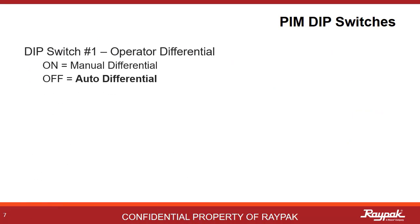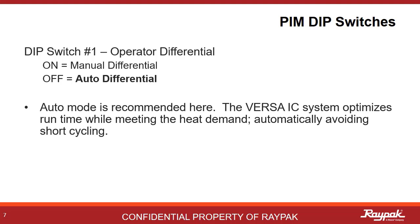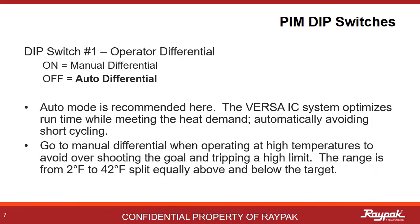PIM dip switch number one gives the operator the option of defining the temperature differential or to allow the Versa program to determine the best differential for the system. Auto differential is always recommended here. The Versa program will optimize based upon the system inputs to the best differential temperature to avoid short cycling. When it is necessary to run at a very high temperature that threatens tripping the upper limit, you can use a manual differential setting ranging from two to 42 degrees Fahrenheit, split evenly above and below the target.